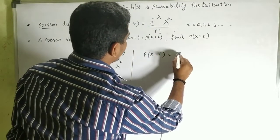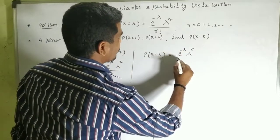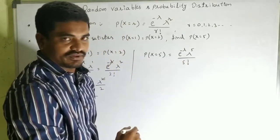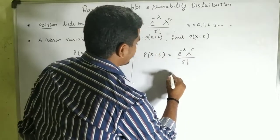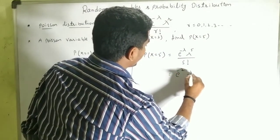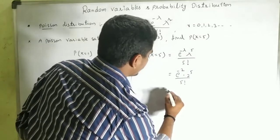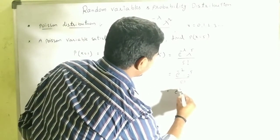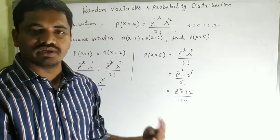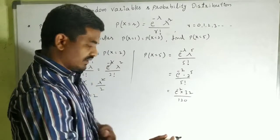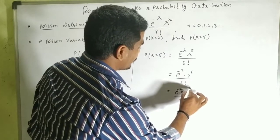Now we find P(X = 5). Substituting r = 5 and λ = 2 into the formula: P(X = 5) = e^(−2) × 2^5 / 5!. We know 2^5 = 32 and 5! = 5 × 4 × 3 × 2 × 1 = 120. So P(X = 5) = e^(−2) × 32 / 120.